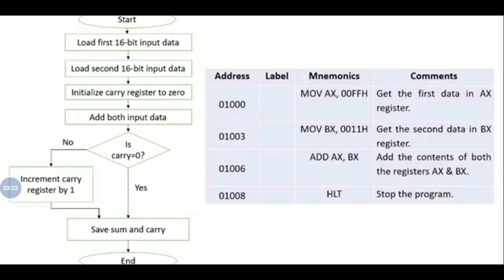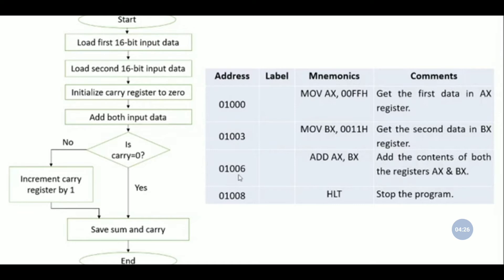There are different methods to perform this program. You can give data as immediate data directly in the instruction, or store the input data at a specific memory location. This first example uses immediate addressing. We take the first input in the AX register, the second input in the BX register, add AX and BX — the sum is stored in AX — and check the carry flag for any carry.